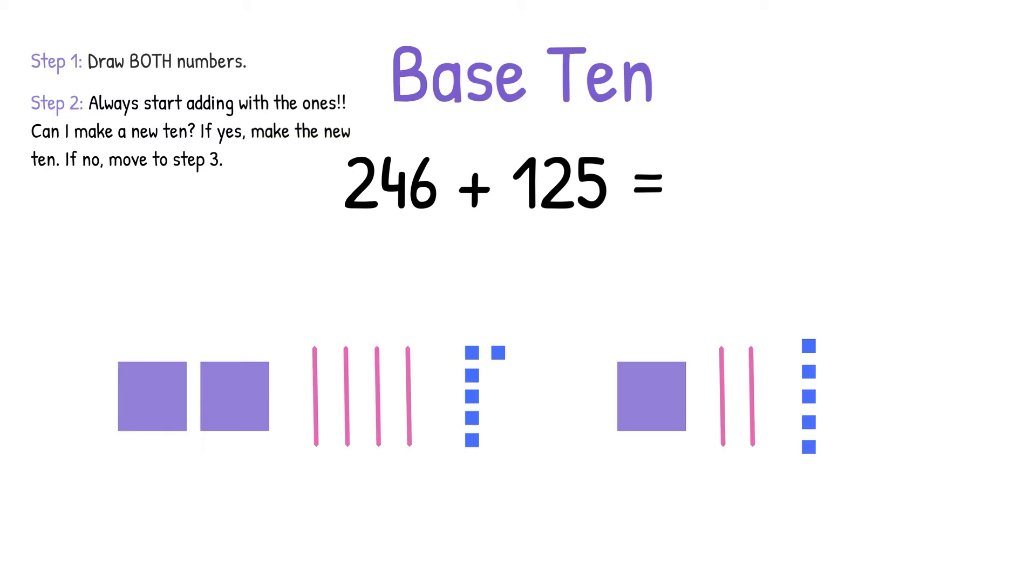In this problem, we have 6 ones and we have 5 ones. We can make a new ten. I know my Make a 10 fact, so I know that the 6 needs a 4 to go with it to make a new ten.